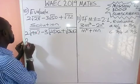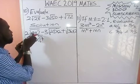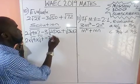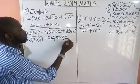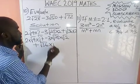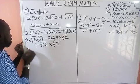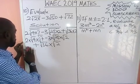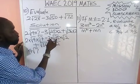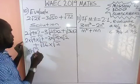Now we open the brackets using the rules of surds. We get 2 times √4 times √7, minus 3 times √25 times √2, plus √36 times √2. The root of 4 is 2, so 2 times 2 gives us 4. So we have 4√7.